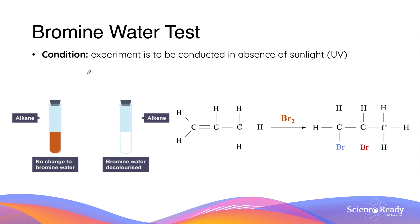In order for the bromine water test to be a valid chemical test, the experiment must be conducted in the absence of sunlight. This is because in the presence of sunlight or UV light, alkanes can also react with bromine water in a substitution reaction, and the result of that reaction will also decolourise the alkane solution. So if the aim of the bromine water test is to distinguish between an alkane and an alkene, you must perform the experiment in the absence of UV light.